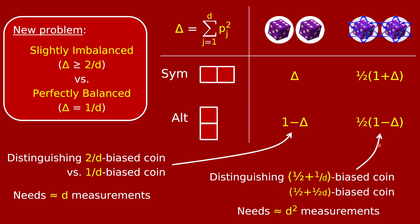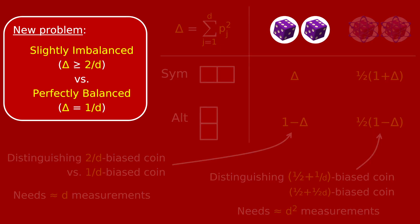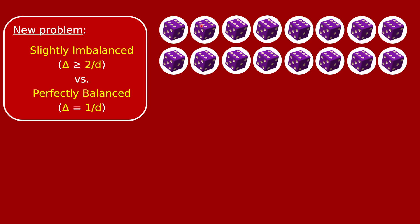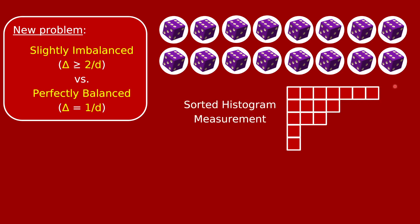You can actually do better than this. Going back to the classical case: if you're willing to use many copies of the die, the smartest thing is not to group them into pairs and collate sorted histogram results. Instead, put all those dice into one giant sorted histogram measurer and think about the result there.